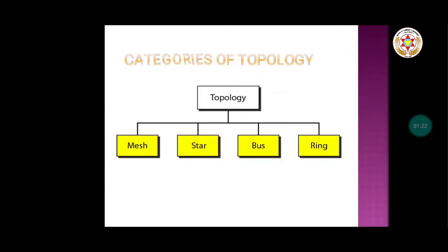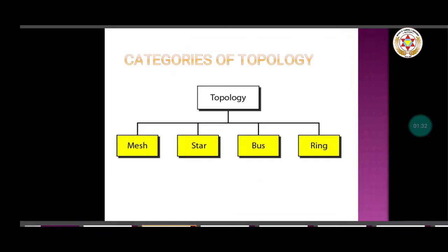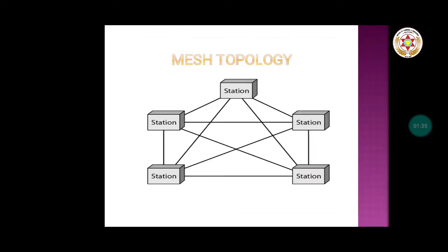On the basis of different arrangements we can categorize topology as bus topology, ring topology, star topology, and mesh topology. These are the major categories. Let us first talk about mesh topology. Here is the representation of how the different stations in mesh topology are connected — each station is connected to some other node with a dedicated link.